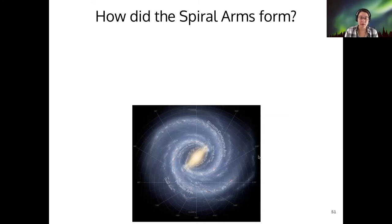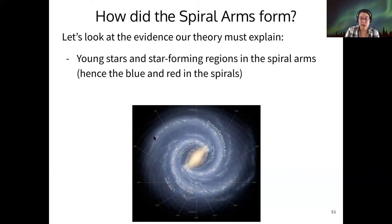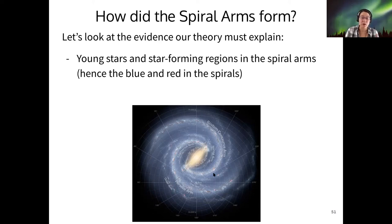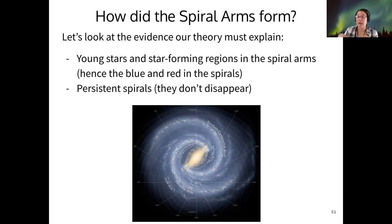Here's our actual map of our Milky Way. If we think about the evidence we saw in our activity, our theory of spiral arm formation has to explain a few different things. It has to explain why there are young stars and those red glowing star-forming nebulae in the spiral arms — why the spiral arms seem to be young compared to other portions of the galaxy. It also needs to explain why the spiral arms are persistent, why we can look back in time by looking farther in space and see spirals early and late in the age of the universe.